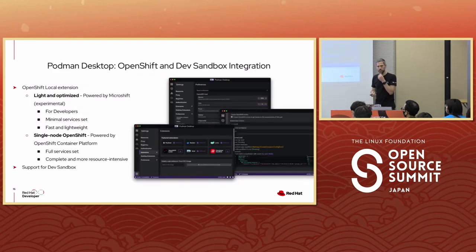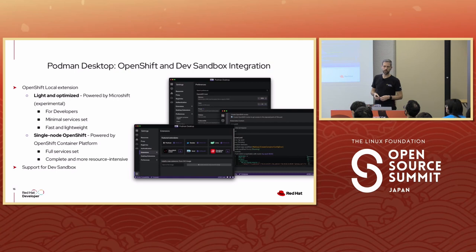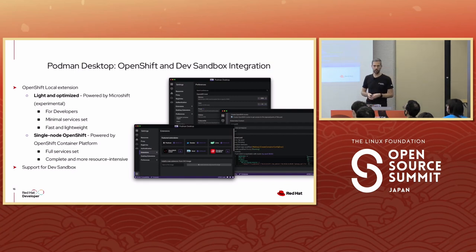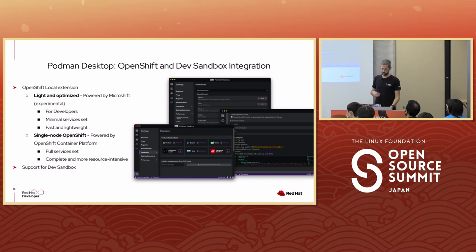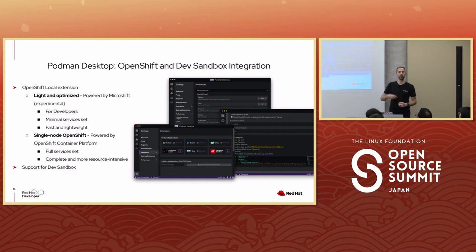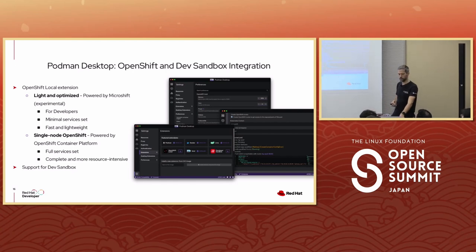Speaking of Kubernetes, Podman Desktop tries to make life easier there too. OpenShift is an implementation of Kubernetes, and Podman Desktop can help you create an OpenShift local instance on your local machine. It can also enable you to create a minikube or a kind cluster, so it supports all sorts of different ways of dealing with containers.